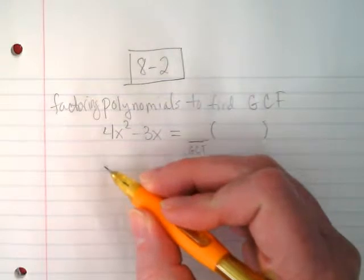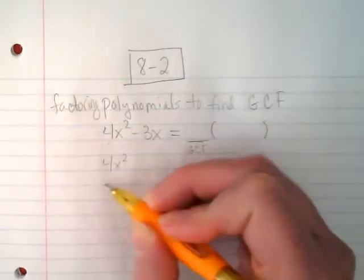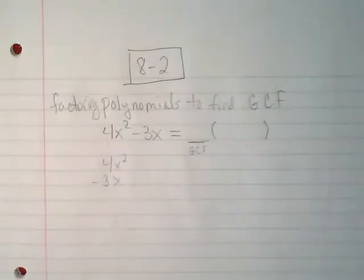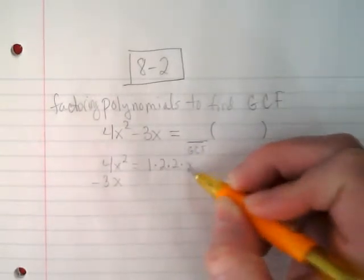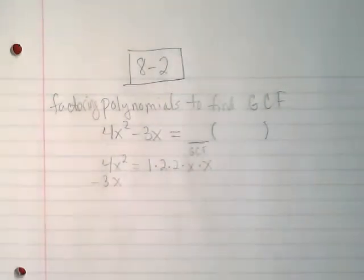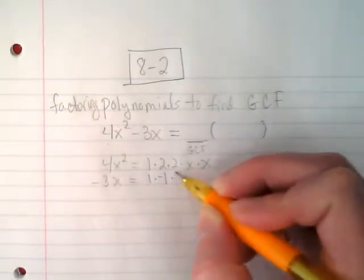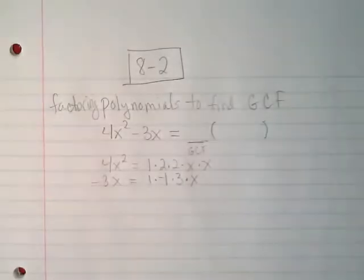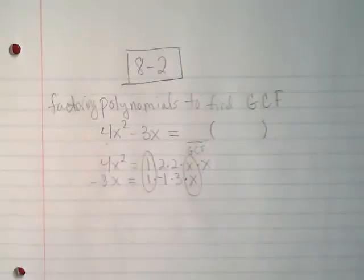So let's take a look at what that looks like. To find it, we're going to do the work similar to what you guys were doing yesterday. We're going to take the two terms from this and write them down here. And we're going to pull them into their pieces and find what they have in common. So 4x squared would be written as 1 times 2 times 2 times x times x. Negative 3x would be 1 times negative 1 times 3 times x.